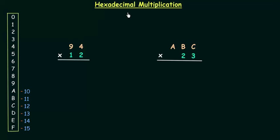In this lecture we will learn hexadecimal multiplication. I have two problems. In the first problem we have to multiply 94 by 12. First I will multiply 94 by 2, and then I will multiply 94 by 1, and finally we will add the results. So let's move to it.